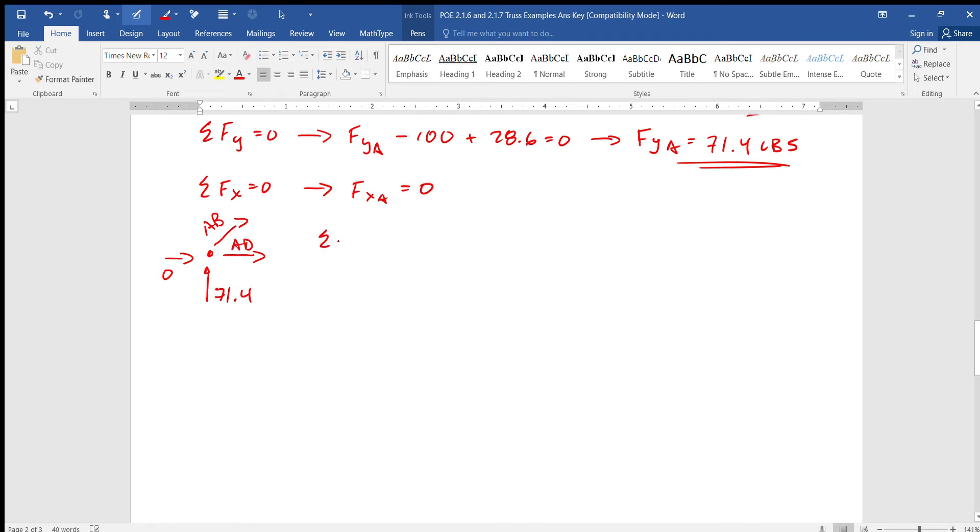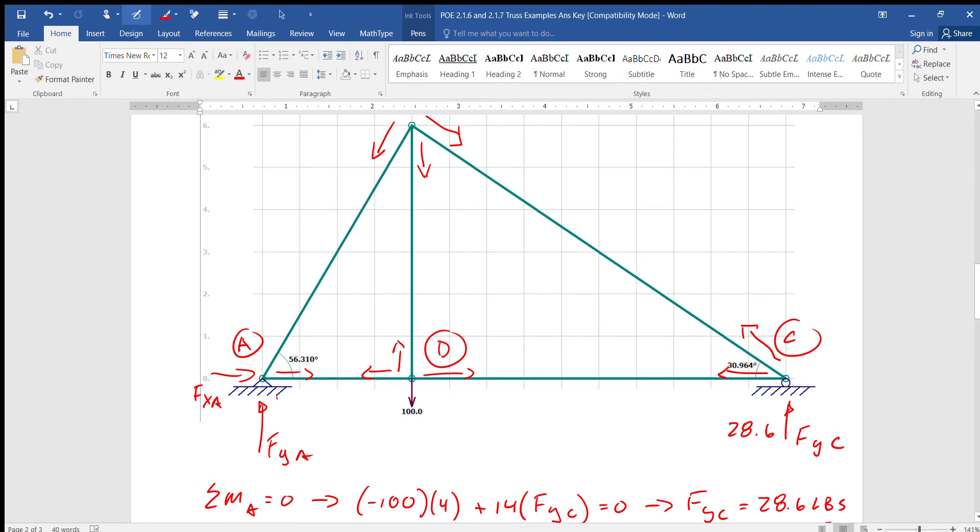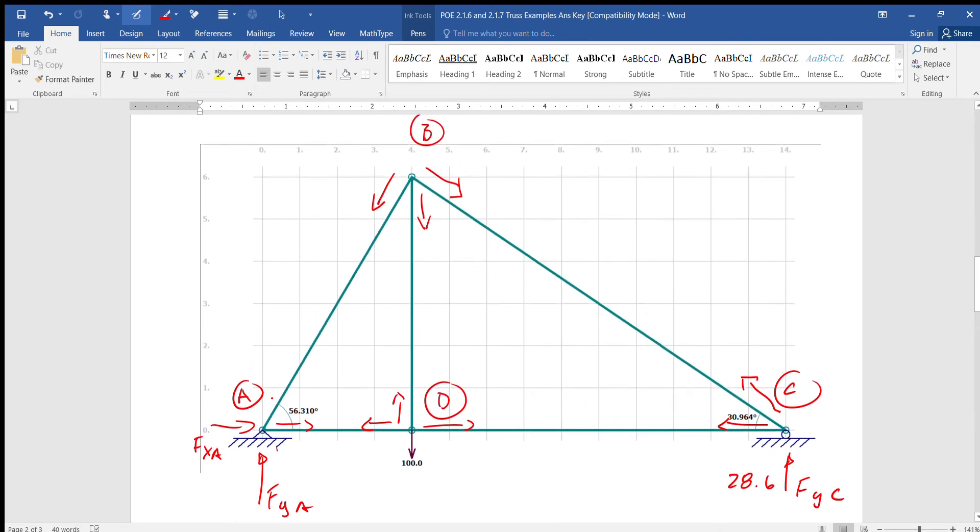So this is zero, except for this one which we know is pointed up and we figured that one out as 71.4. And this is AB, we're considering it in tension right now, and this is AD. So sum of all the y's about A have to equal zero, so we're looking at A at 71.4 plus AB sine of 56.310.